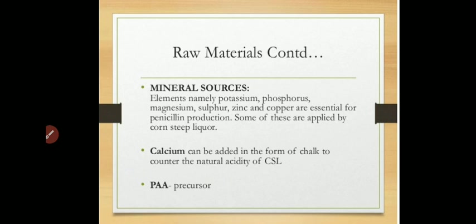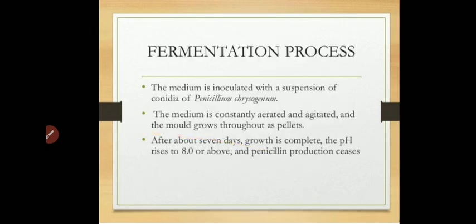Chalk is added in the medium, and PAA (phenylacetic acid) is added as a precursor which initiates the activity of all these components. Once the media is properly designed and inoculum is developed, we proceed to the fermentation process. Generally, batch fermentation or fed-batch fermentation is used.